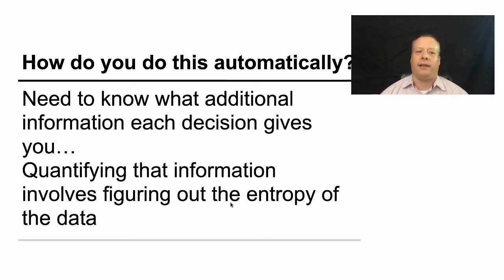Well, to do that, you're going to need to know additional information. You don't even know what additional information each decision point gives to you. And so for that, we're going to have to quantify the information that that decision point generates. If we can do that, then we can figure out what's called the entropy of the data, and we can try and decrease that entropy over time, allowing us to make better and better predictions.